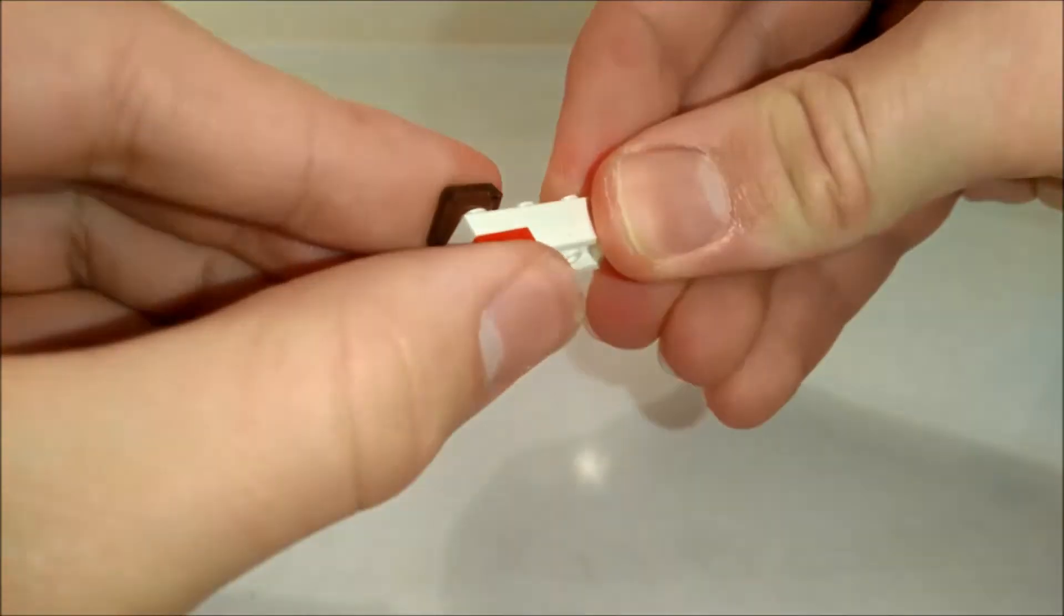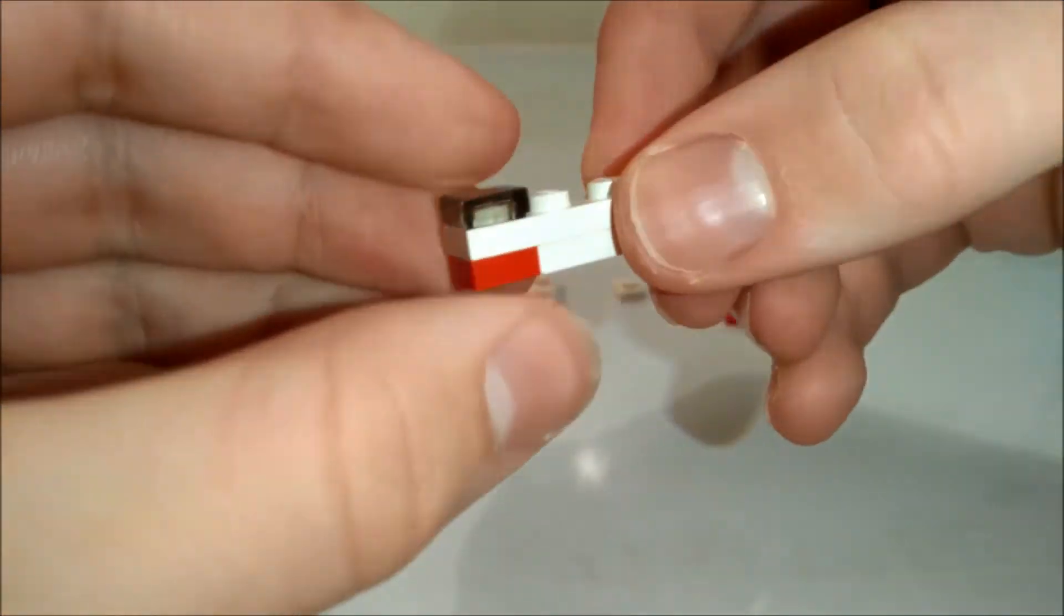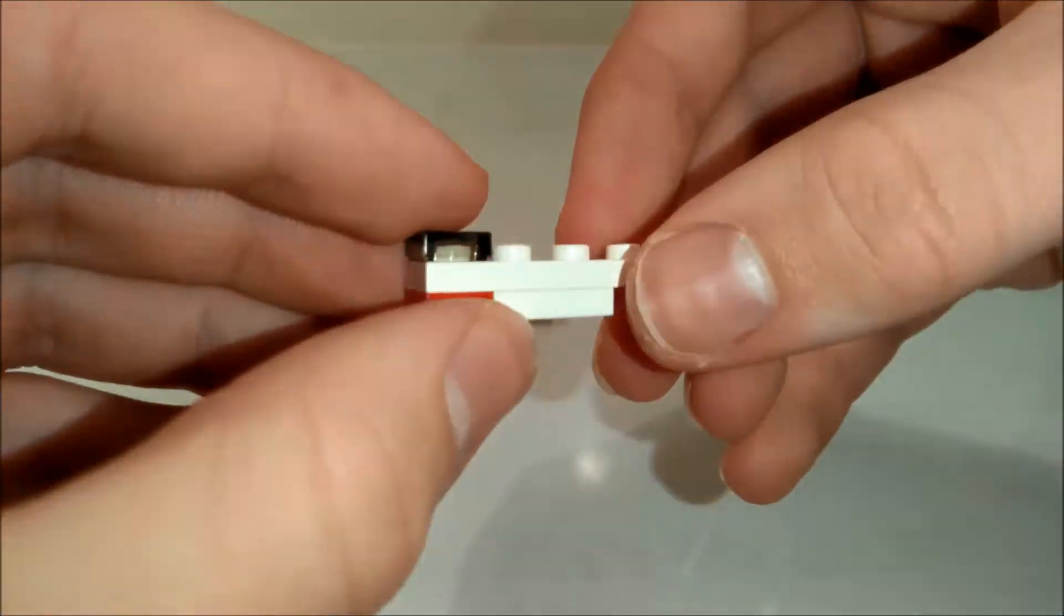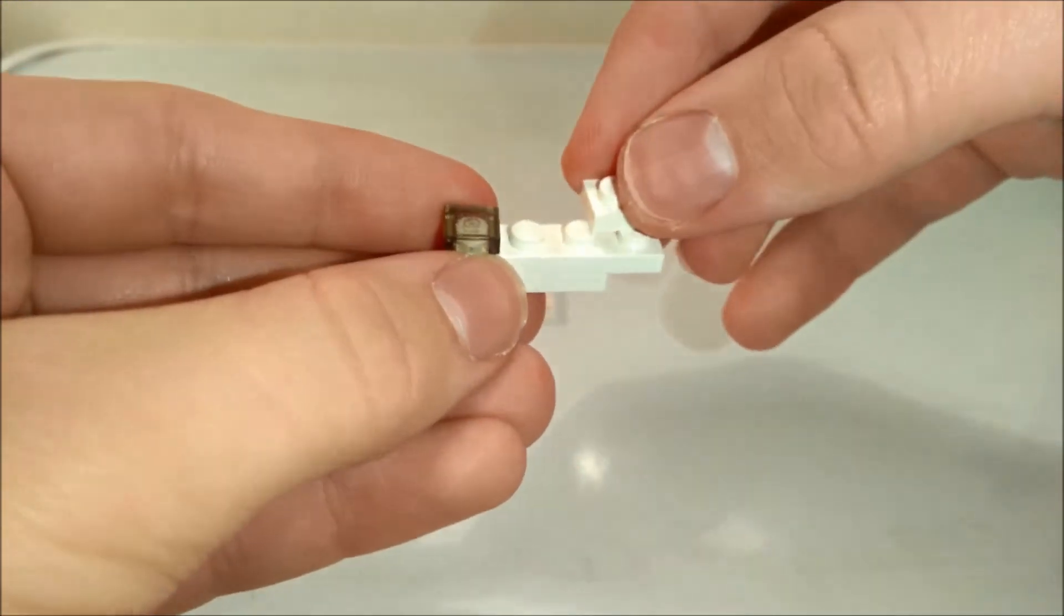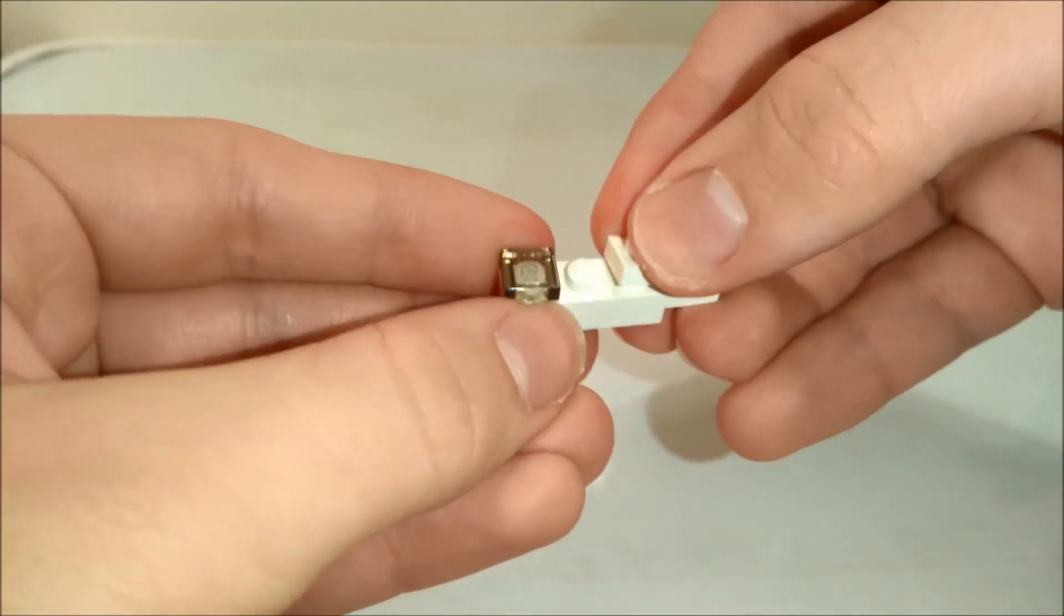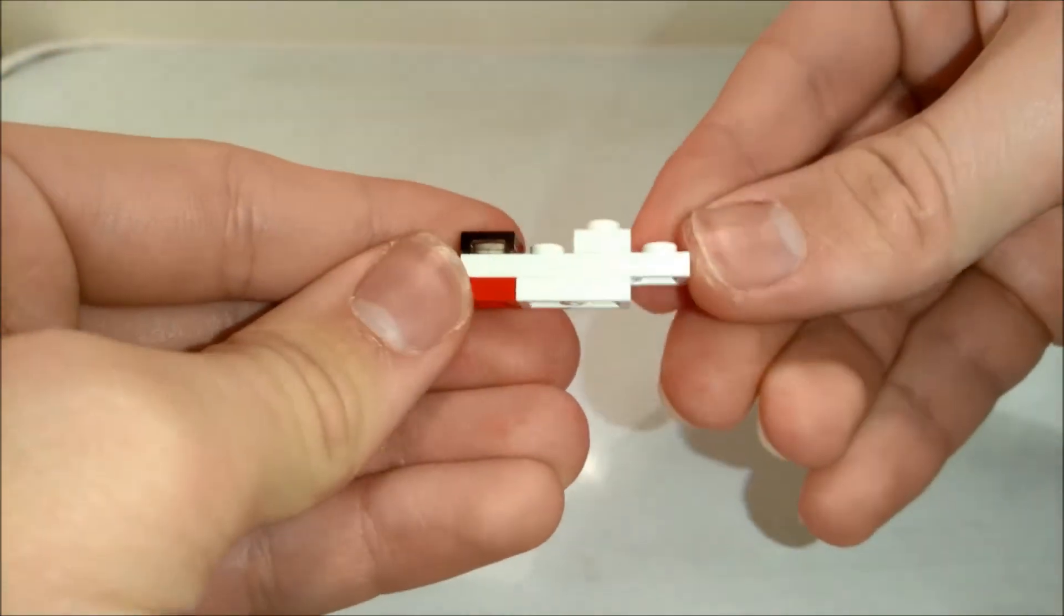Above that, we're going to put a 1x1 clear tile, which is going to be like the cockpit, the viewport, and then on the second stud along of the three, a 1x1 white plate, like that.